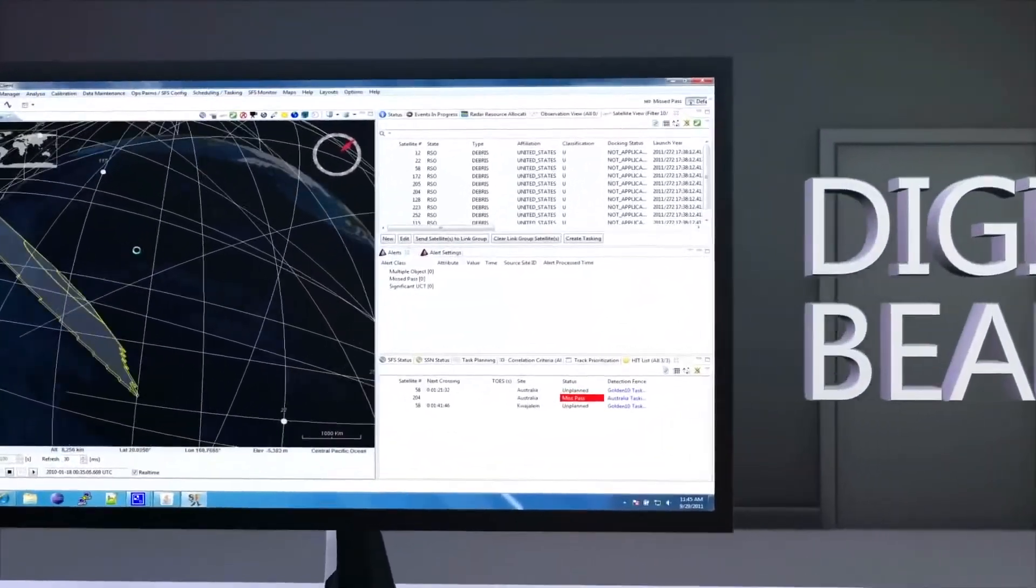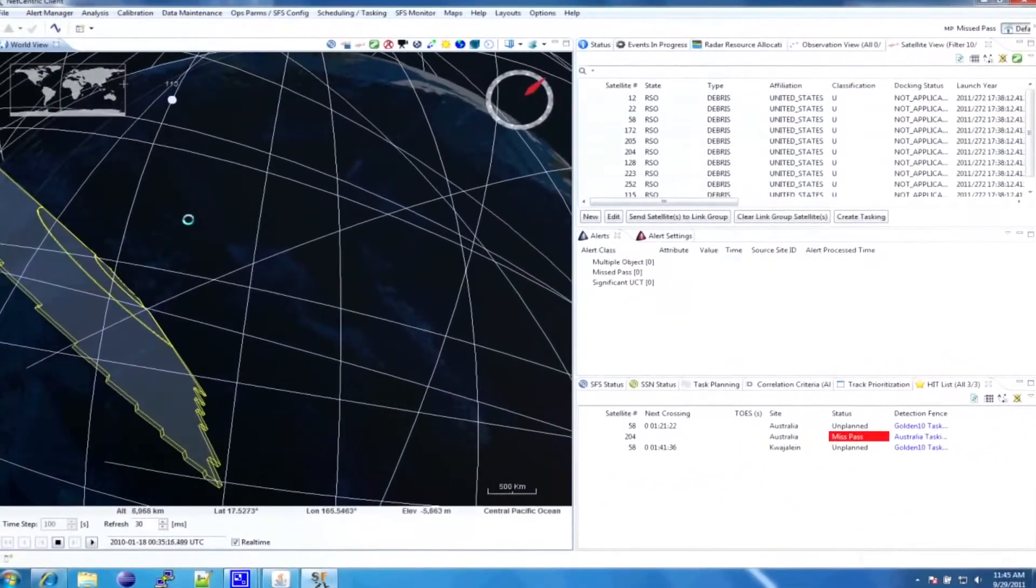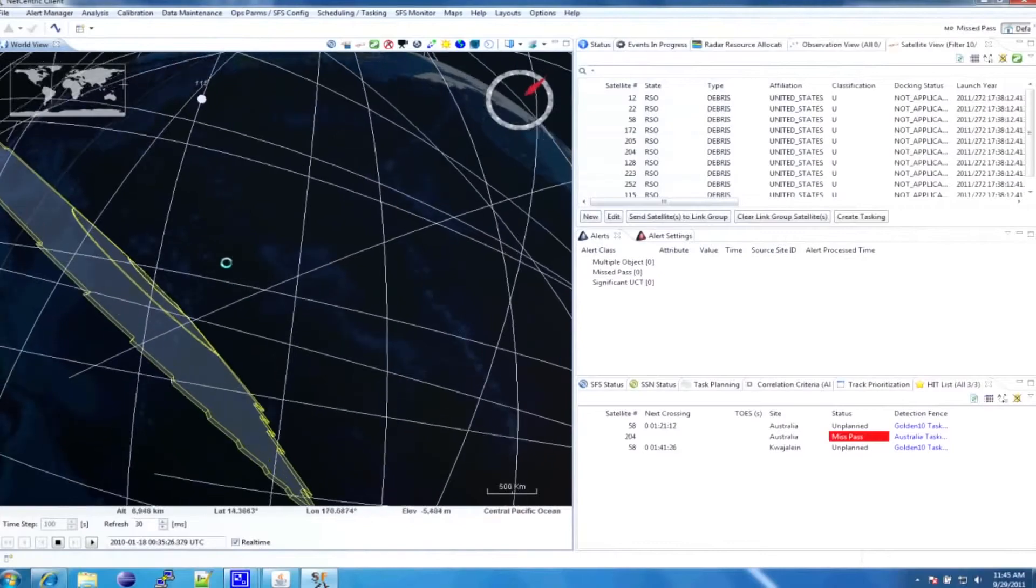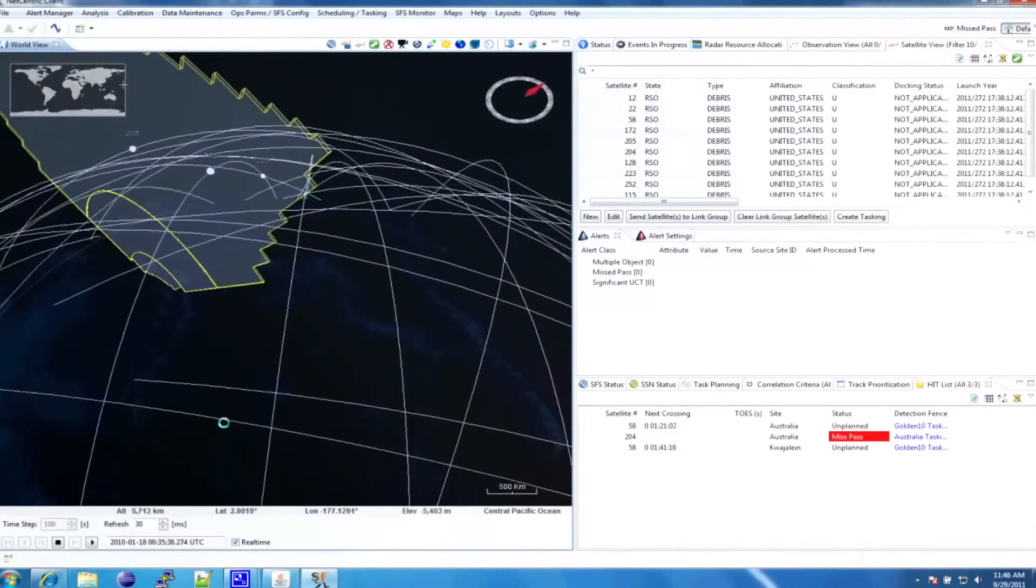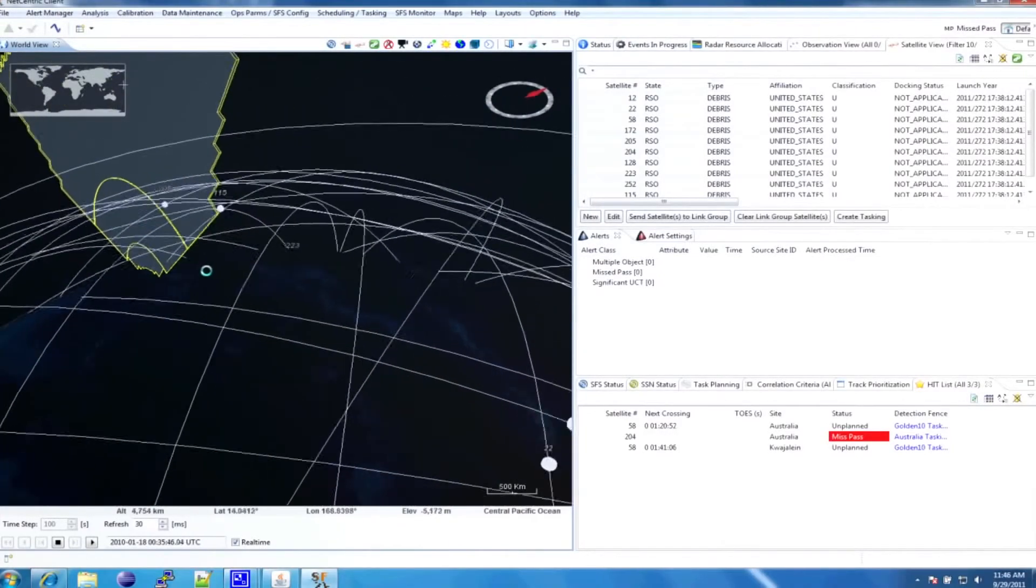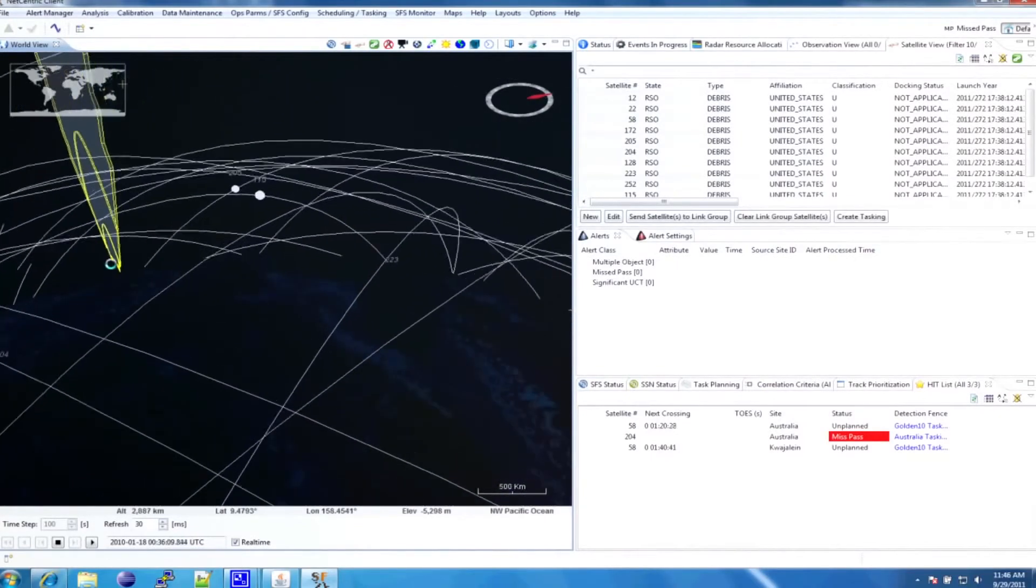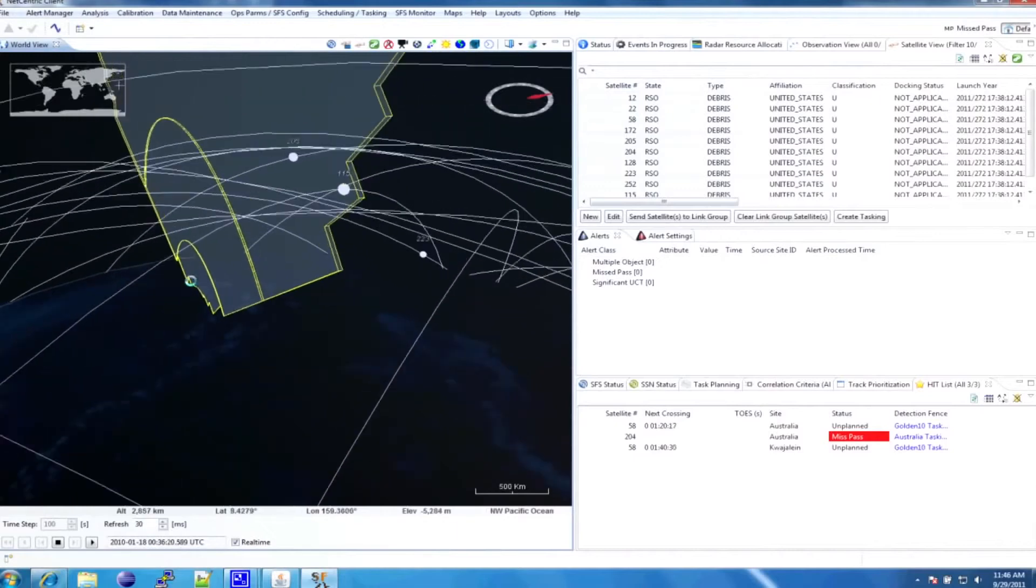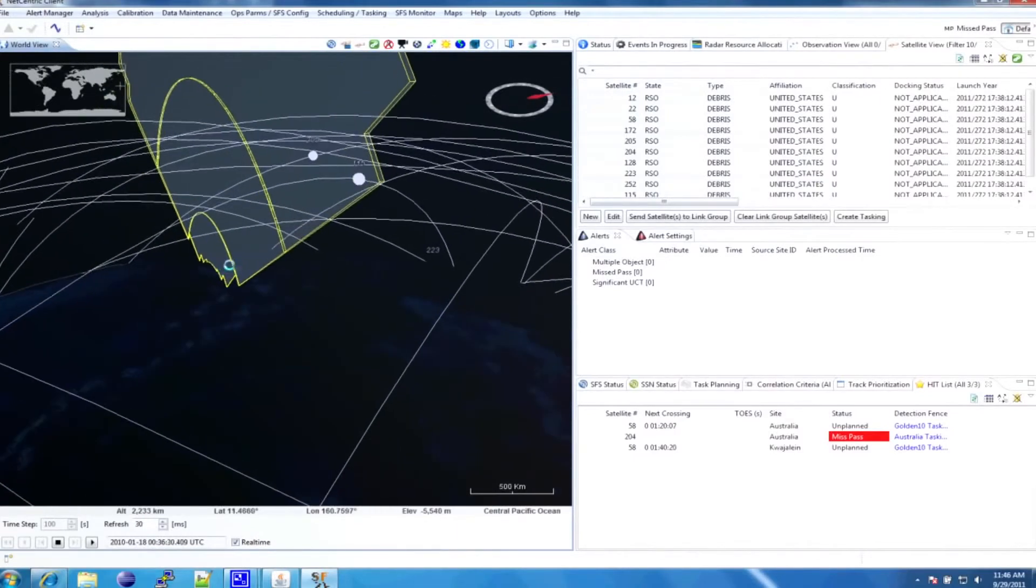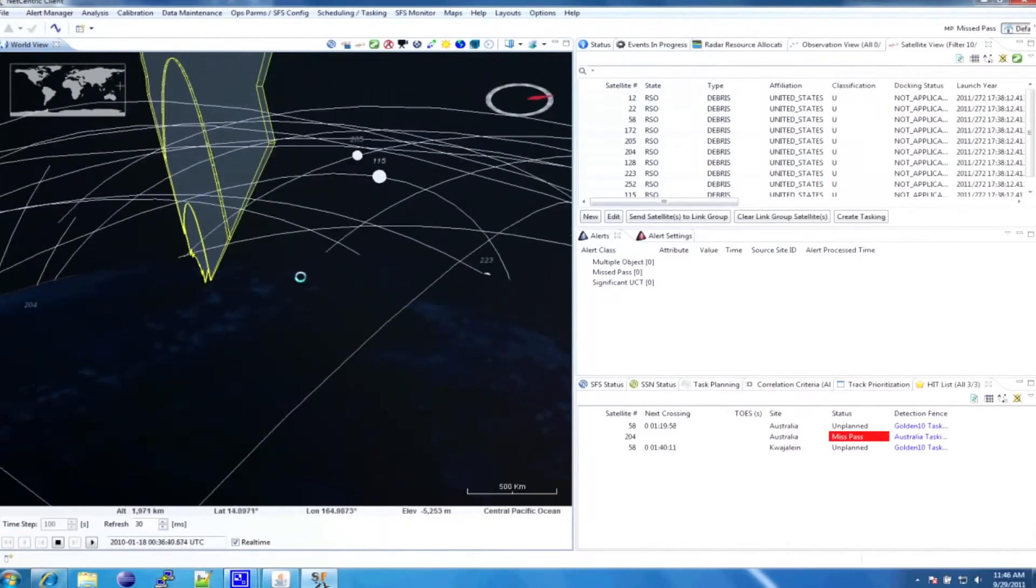This capability permits tremendous user-defined flexibility to customize volume surveillance and track sectors instantaneously without impacting routine surveillance functions. It has simultaneous search and track functions, detects significant UCTs, breakups, and maneuvers. And the flexible design supports operational resource allocation.